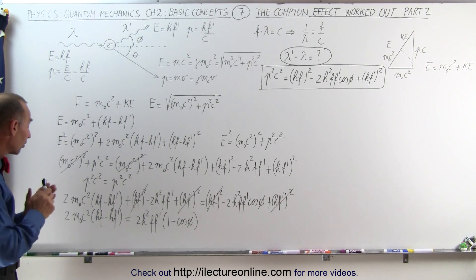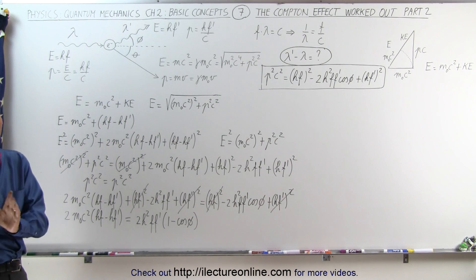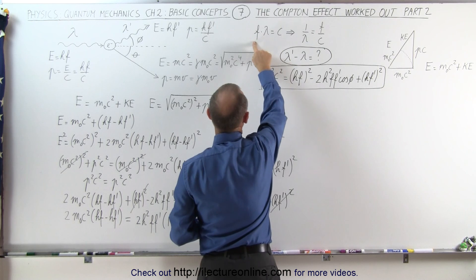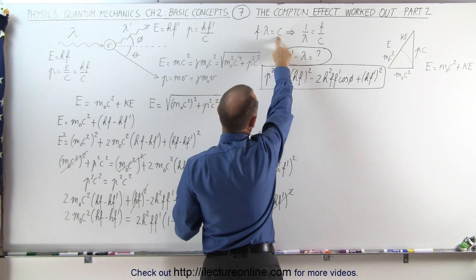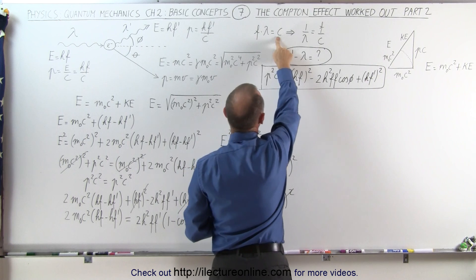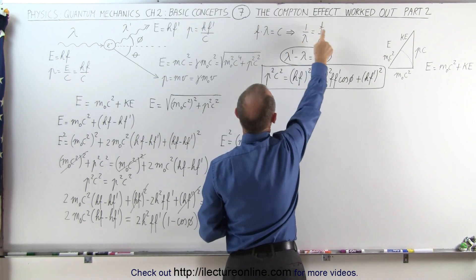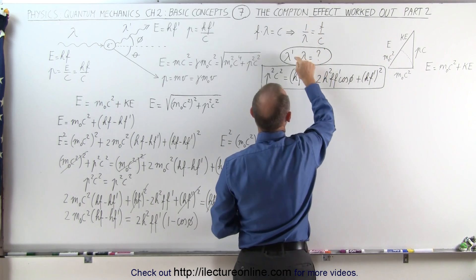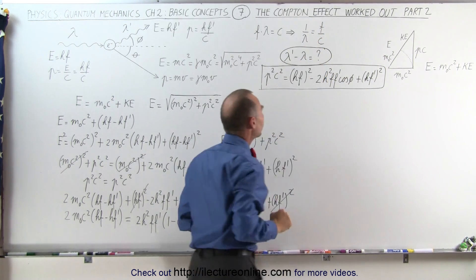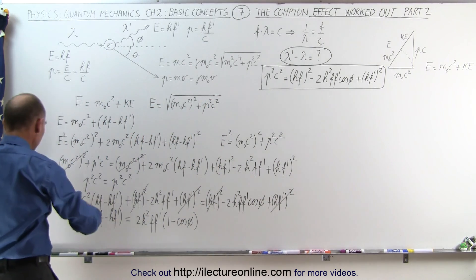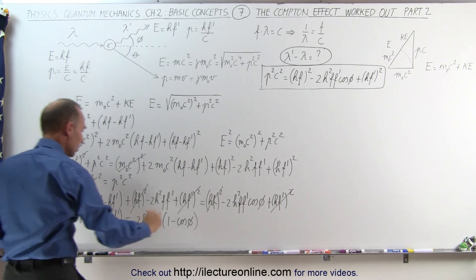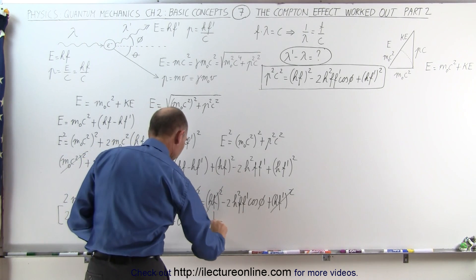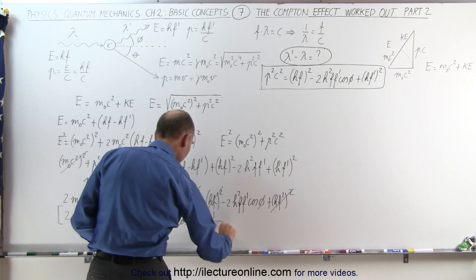Things are starting to look better. The wave equation says frequency times wavelength equals the speed of the wave — in this case the speed of light. If we solve for 1 over lambda, that equals F over C. So I can take F over C and convert to 1 over lambda. In order to accomplish that, I'm going to take this equation and multiply both sides by 1 over 2H squared C squared.